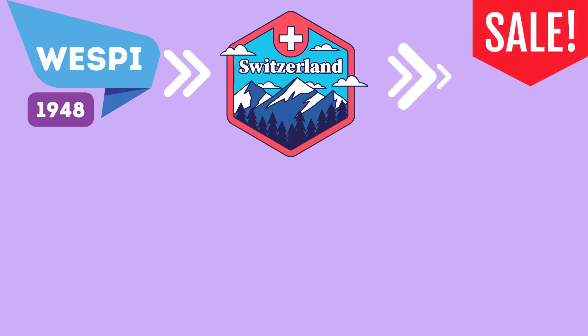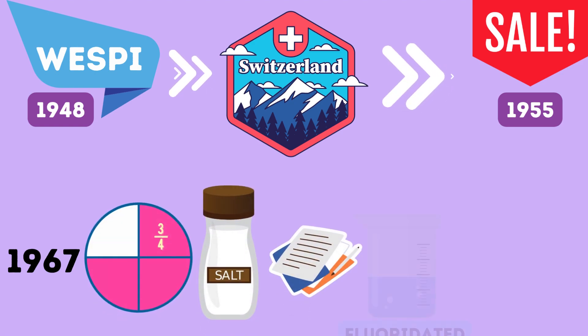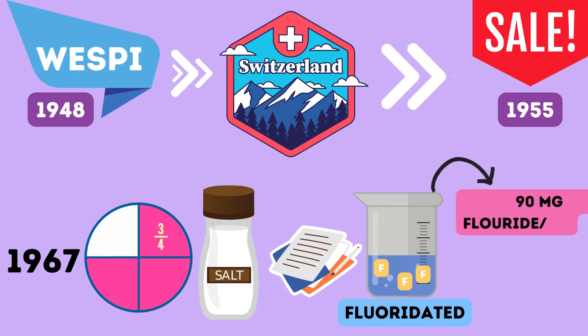This method was introduced by Westby in 1948 in Switzerland and has been on sale there since 1955. By 1967, more than three-quarters of domestic salt sold in Switzerland was noted to be fluoridated at 90 mg of fluoride per kg salt.